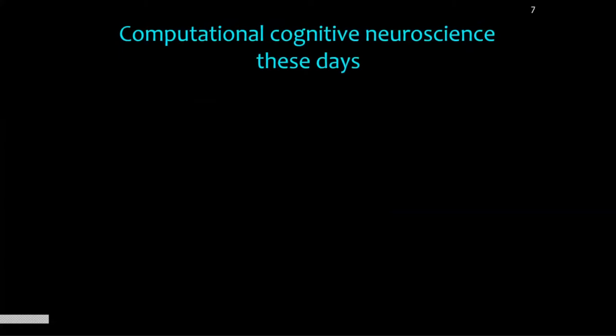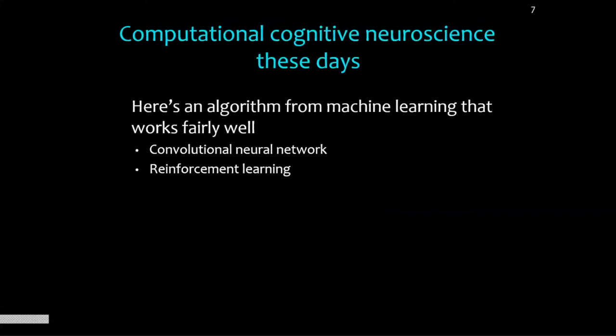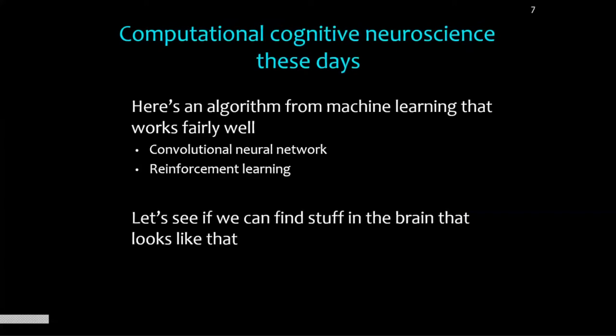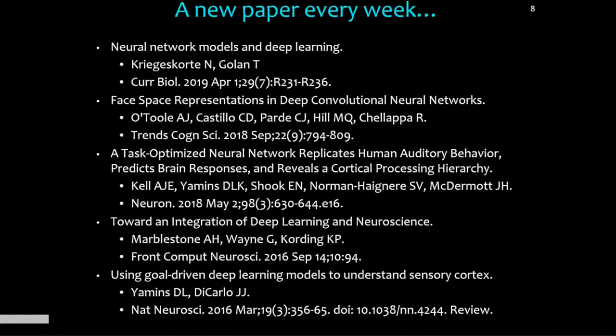I think there are still some major challenges. What people often do these days — and I've done it too — is say, here's a machine learning algorithm that works fairly well, like reinforcement learning, let's look at some brain data and use this known algorithm as a model to see if we can find stuff in the brain that looks like that. That's a reasonable approach, but notice the neuroscience is riding on the coattails of machine learning. Papers like this come out all the time, all taking algorithms from machine learning and using them as a template for understanding what's going on in the brain.